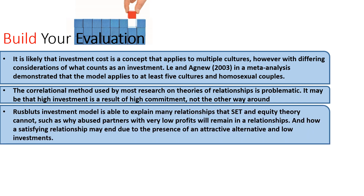Linked on to the Rodrigues and Axsom study, the Rusbult investment model really can explain a lot of relationships that social exchange theory and equity theory really can't — for example, why partners with really low profits might maintain a relationship. But it also explains how a quite satisfying and enjoyable relationship might just end because an attractive partner appears and there's been low investment. That being said, many relationships in their early stages have rocky patches — there might be cheating, there might be arguments — and quite a lot of these relationships survive that phase. The investment model simply doesn't explain this, because at early stages very little is invested: there are no children, few mutual friends, and usually people aren't living together.